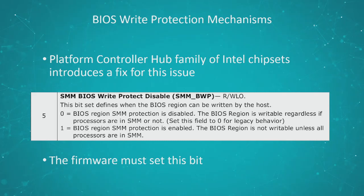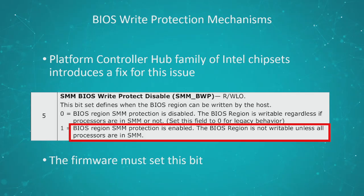Intel came up with a fix for this vulnerability. What they did is that they added a field in the BIOS control register, introduced in the Platform Controller Hub family of Intel chipsets around 2008. This field is called SMM BIOS Write Protect Disable — the name is a bit misleading, but if you remove 'disable' that's actually what it does. How it works is: if this mechanism is activated, it won't be possible to write to the BIOS region unless all of the cores of the processor are running in System Management Mode. Once again, this bit must be set by the firmware.